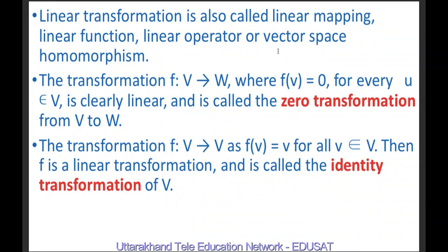The transformation F from V to W where F(v) = 0 for all v belonging to V is called the zero transformation, and it is a linear transformation. The transformation F from V to V defined as F(v) = v is also a linear transformation, and this is called the identity transformation of V.